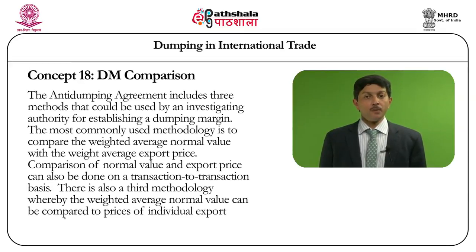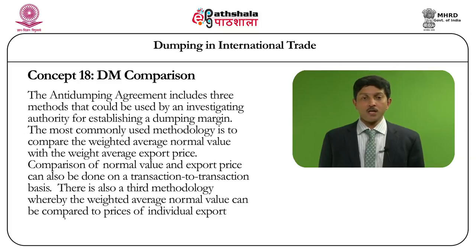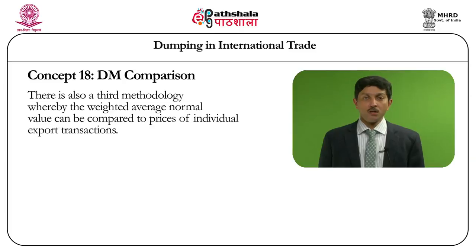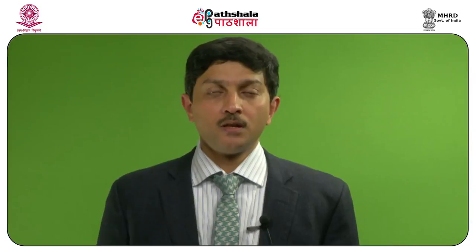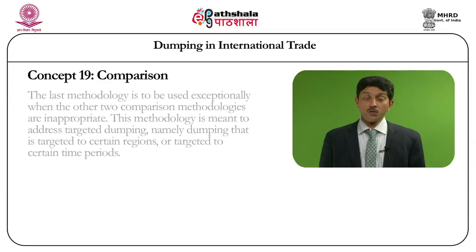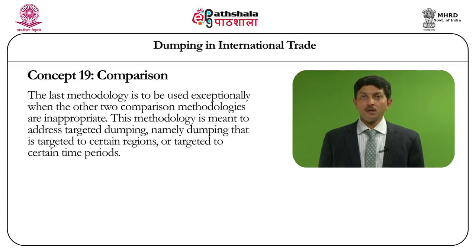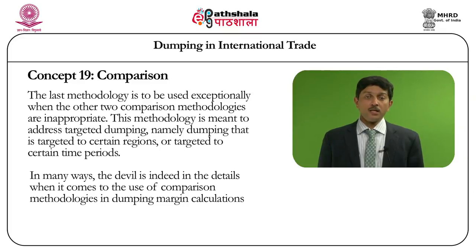The Anti-Dumping Agreement includes three methods that could be used by an investigating authority for establishing a dumping margin. The most commonly used methodology is to compare the weighted average normal value with the weighted average export price during the period of investigation. Comparisons of normal value and export price can also be made on a transaction-to-transaction basis. There is also a third methodology whereby the weighted average normal value can be compared to prices of individual export transactions. This last methodology — weighted average to transaction price — is used in exceptional circumstances when the two other comparison methodologies are inappropriate. This methodology is meant to address targeted dumping, namely dumping that is targeted to certain enterprises, regions, or to certain time periods.